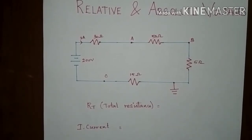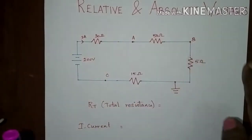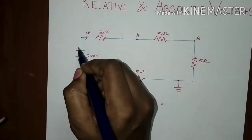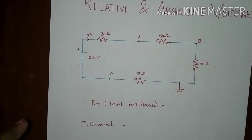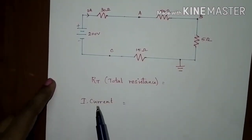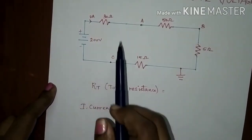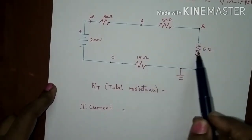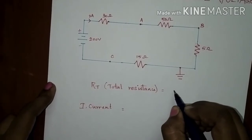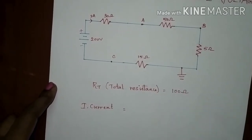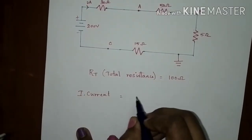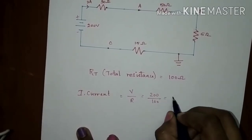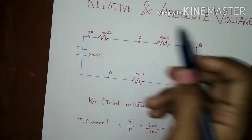Consider this circuit — I have mentioned points A, B, and C. It is grounded and given a supply of 200 volts with a positive terminal and negative terminal. The total resistance value: all resistors are connected in series, so summing them: 30 plus 50 is 80, 80 plus 15 is 95, 95 plus 5 is 100 ohms. R total is equal to 100 ohms. The current flowing through the circuit is voltage divided by resistance: 200 divided by 100, giving 2 amperes.